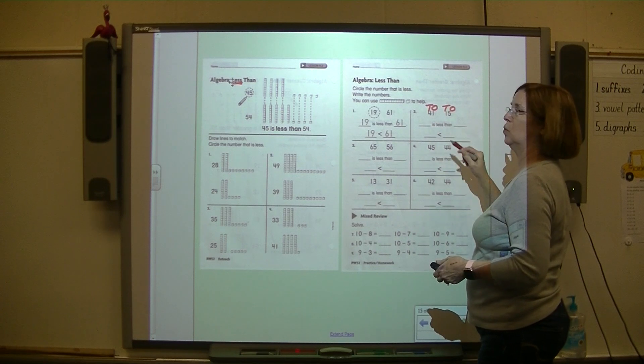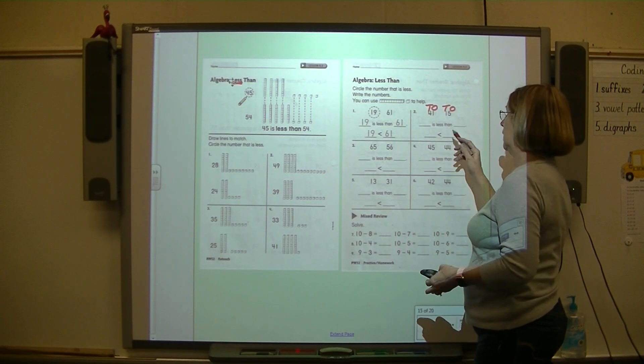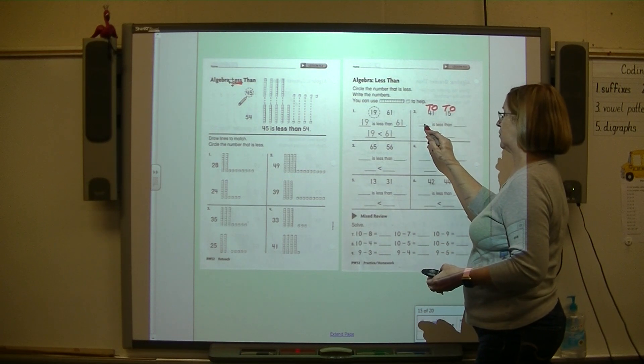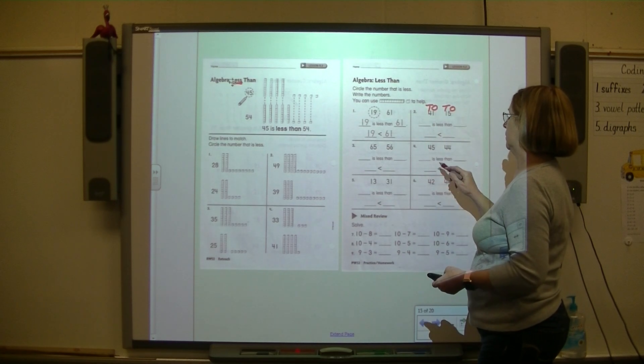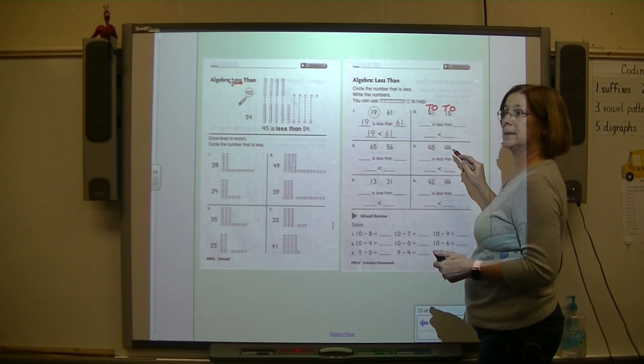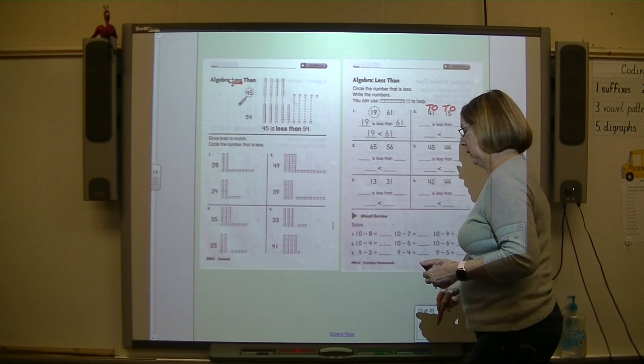...at the tens. Which is less: four tens or one ten? One ten. So this number is less - fifteen is less than forty-one. Then you'll write it down here using the symbols as well. All right, so that's what...